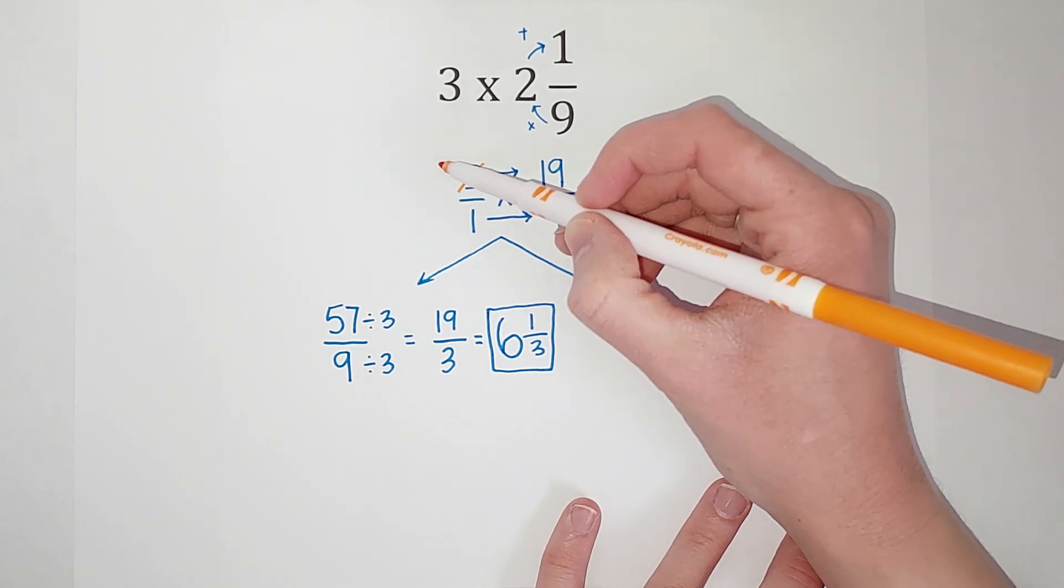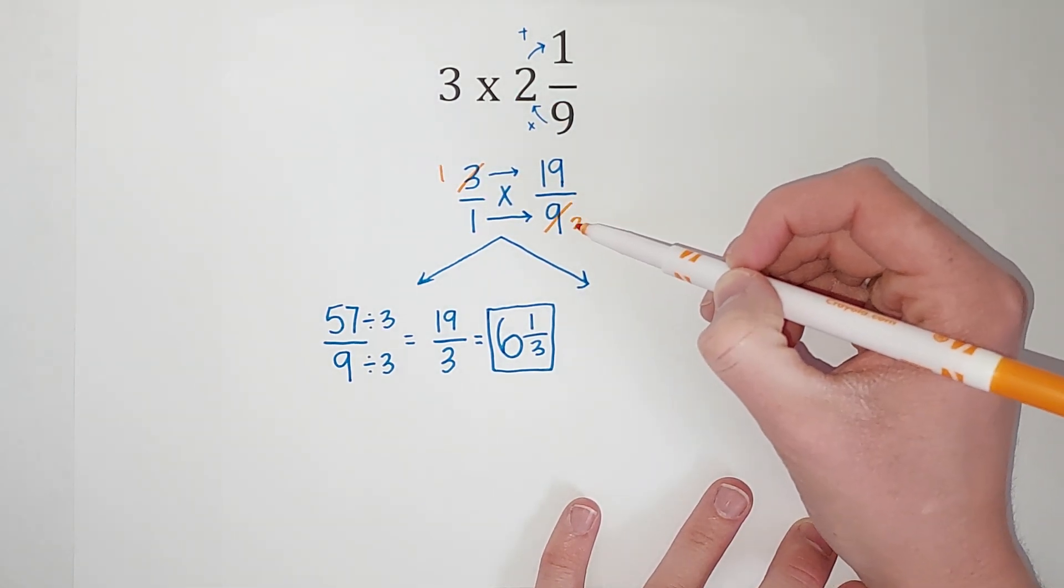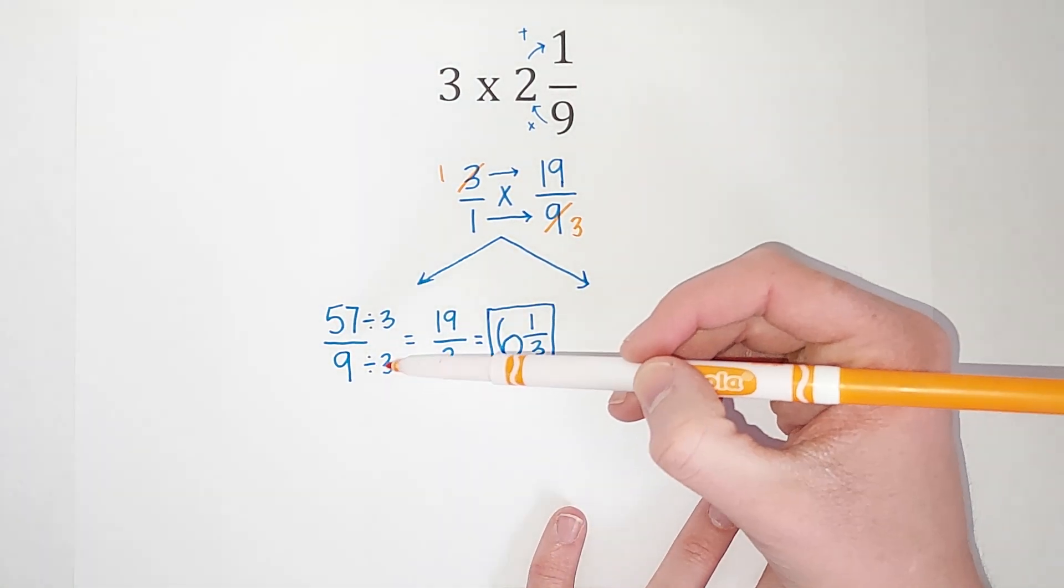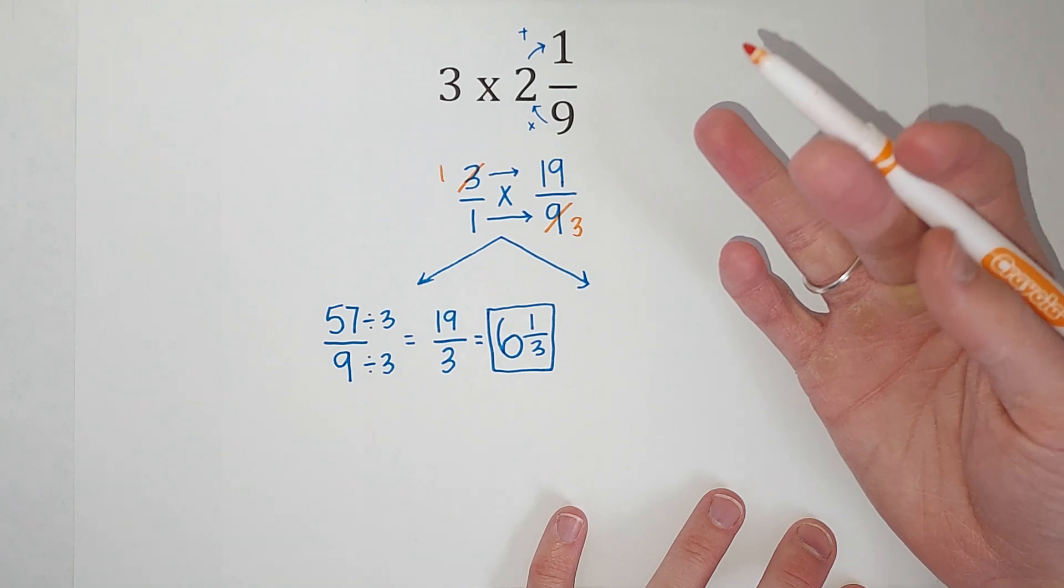So I go ahead and think, well, 3 goes into 3 once, and 3 goes into 9 three times. We're taking out the 3 the same way we did here. We're just doing it before we multiply this time.